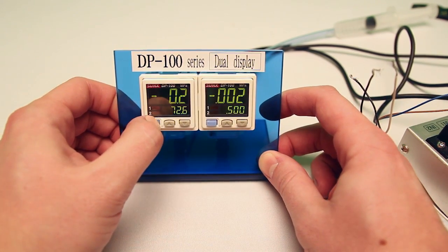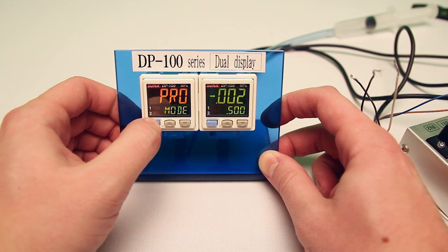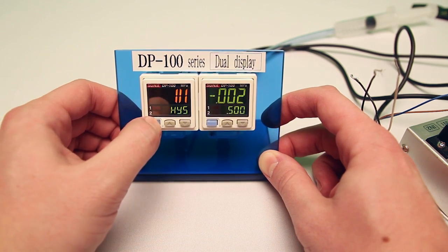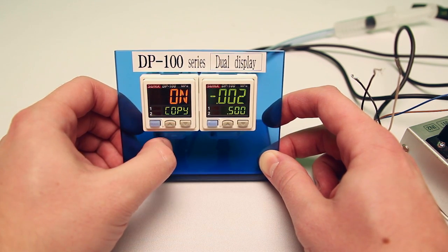On the first sensor, I'm going to hold the mode button for about four seconds to get into the pro modes. Then I'll toggle over to copy and push the up button to turn it on.